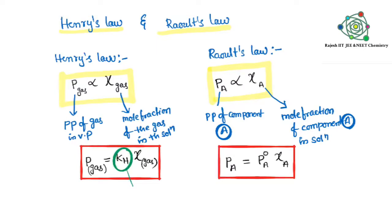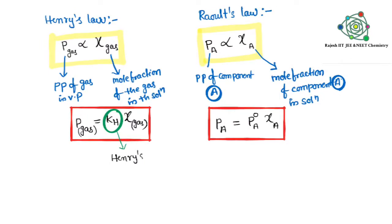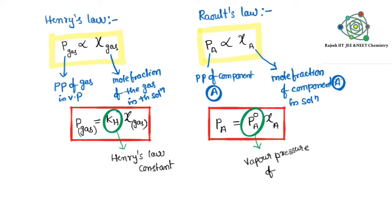The difference between these two formulas you can observe here: KH is the Henry's law constant, whereas in Raoult's law we have P°A. P°A is the vapor pressure of component A in its pure form — this is very important. The superscript naught indicates pure form, so P°A is the vapor pressure of component A in pure form.